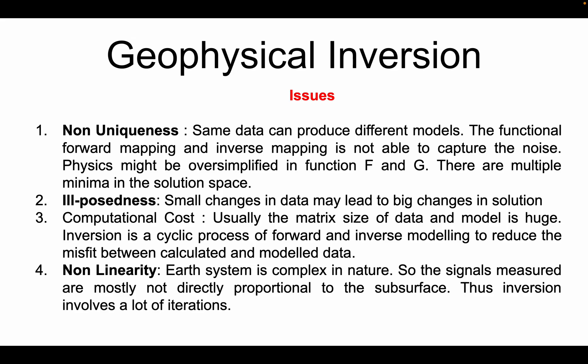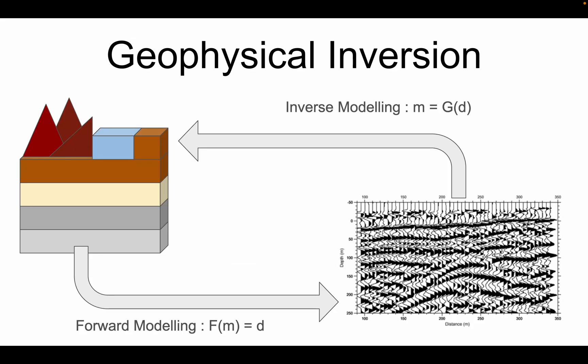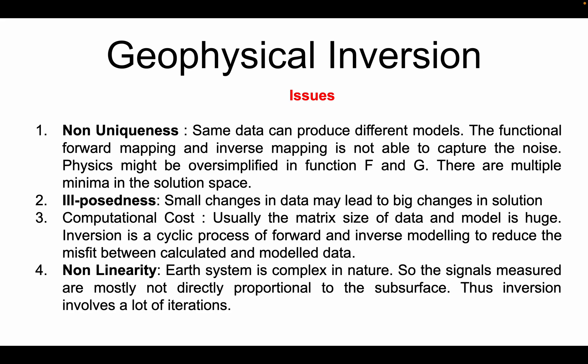This happens because there is noise in the data and sometimes the equations which we are using — here for forward modeling I'm using the function F, and for inverse modeling a function G — both of them might be having oversimplification in them.